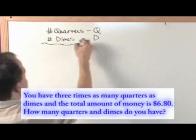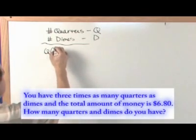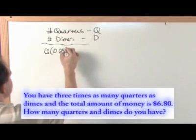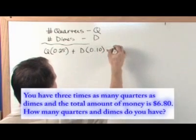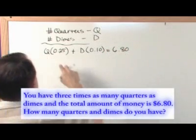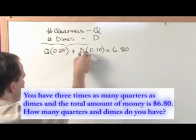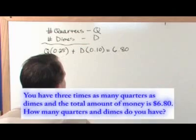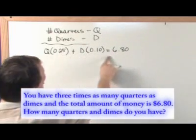So you're given, first thing, is the total amount of money you have is $6.80. So how would you do that? The number of quarters you have times $0.25 for each quarter plus the number of dimes you have times $0.10 for each one of these is $6.80. That's a very important thing to be able to write down because all of these problems are going to do that. Number of quarters times $0.25 plus number of dimes times $0.10 is the total amount of money you have. So that's equation number one.